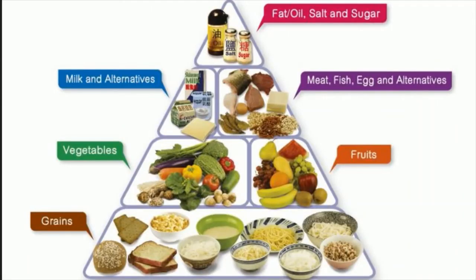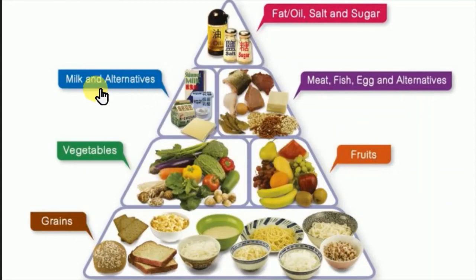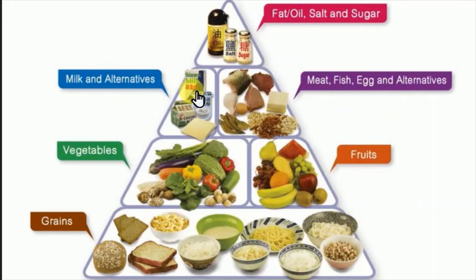Once you complete this project with the tabular column, you will understand which food components we need to take. In a food pyramid, grains are at the maximum level, so we need to take the most grains. Second rank goes to vegetables and fruits. Third rank is milk and meat alternatives — take only a little. The last rank is fats and oils — take very little.